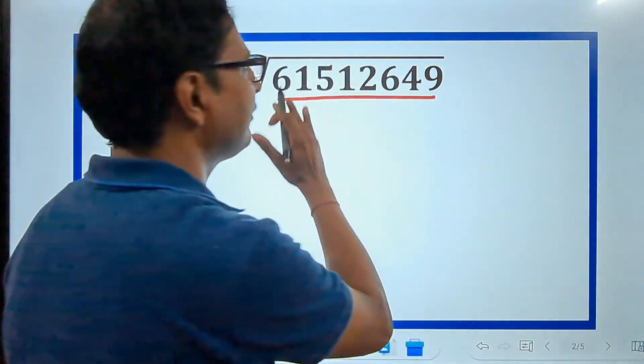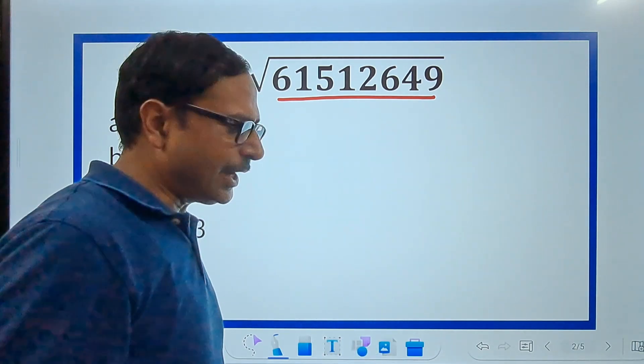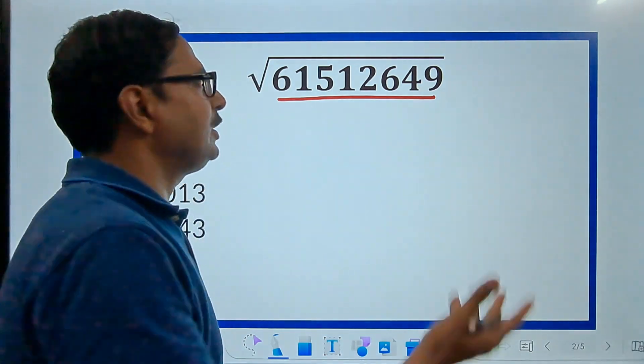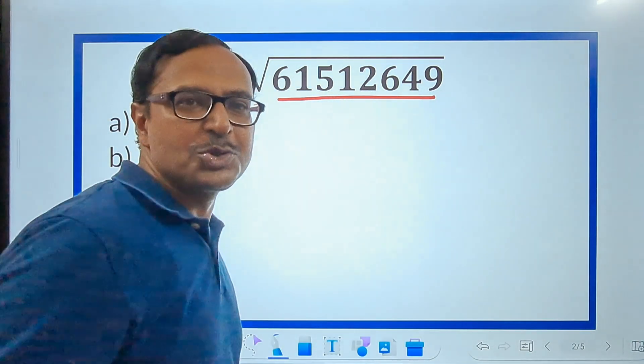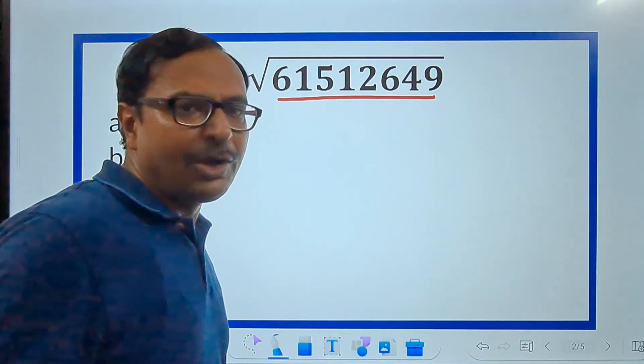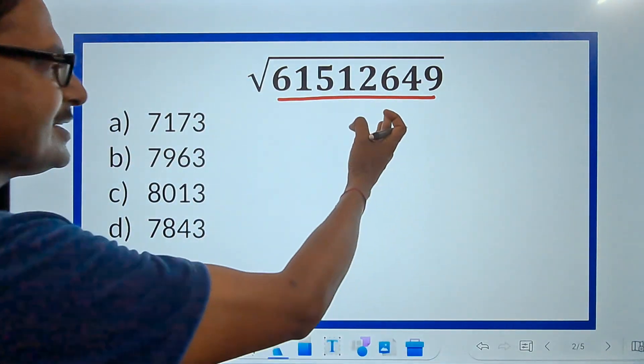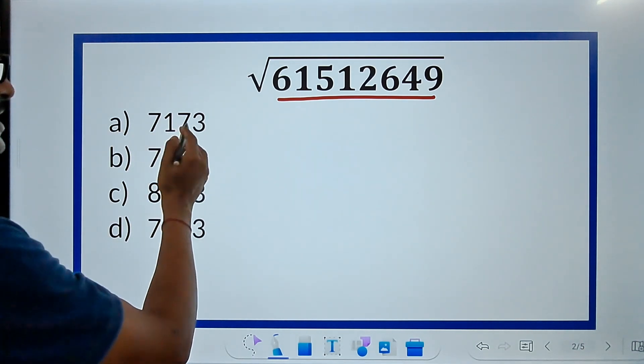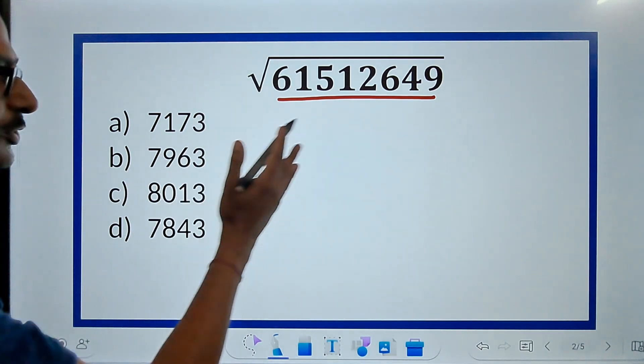We have to find the square root of 61512649. Is there a method which you know? I don't think so. Till now, even I knew the long division method and the prime factorization method. I don't have guts to make factors of such a huge number like an 8-digit number. And long division method is going to consume a lot of time. I want to crack this multiple choice question. Which of these is the correct answer? Is it 7173 square which gives me this? Or 7963 or 8013 or 7843?